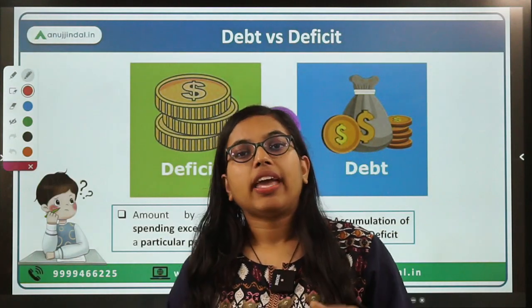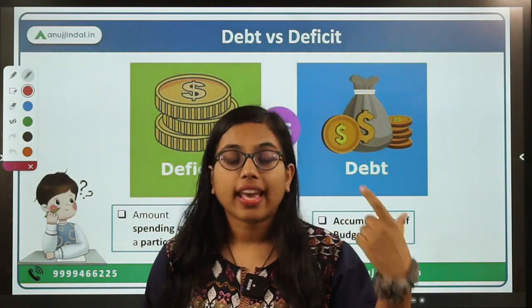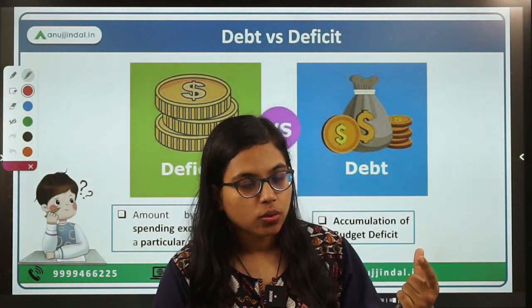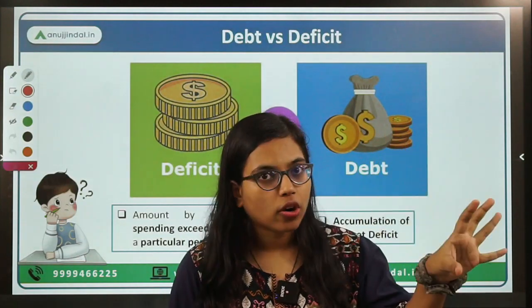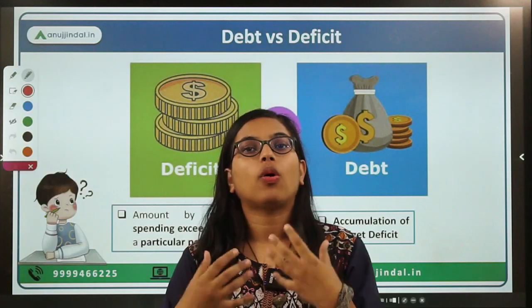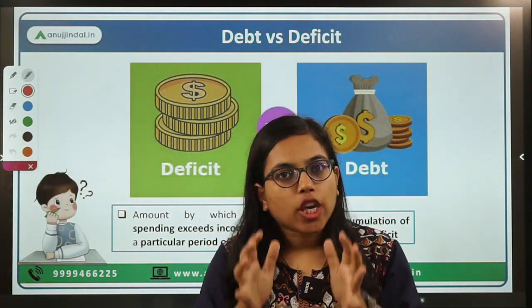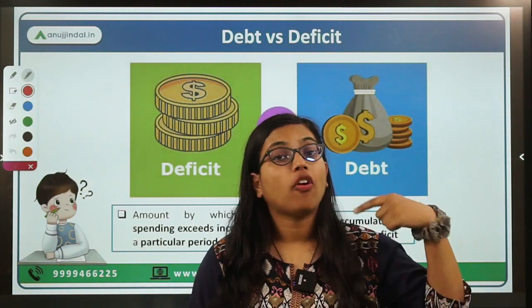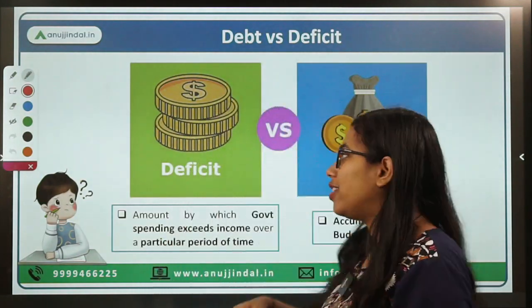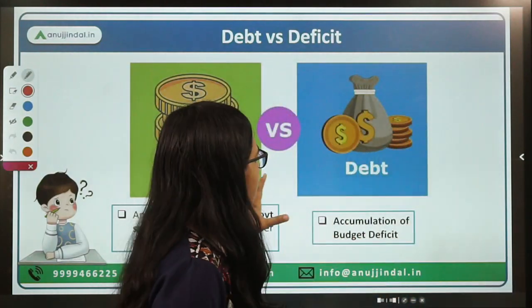However, in order to meet those deficits — those extra expenses — the government goes on taking loans. So the extra loan or borrowings taken to meet that shortfall adds up to the debt. The accumulation of deficit and meeting those deficits through borrowings is known as debt. I hope the difference is very much clear to you.